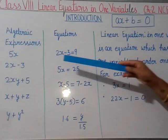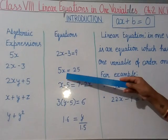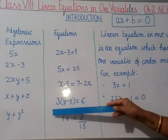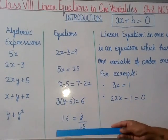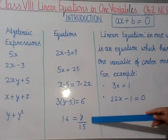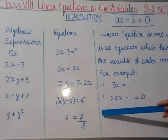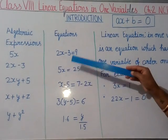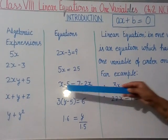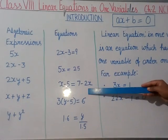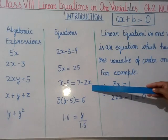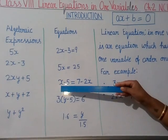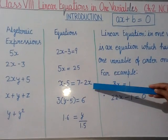Now, observe one by one: 2x minus 3 equal to 9, 5x equal to 25, x minus 5 equal to 7 minus 2x, 3 into y minus 5 equal to 6, and 1.6 equal to y upon 1.5. These are equations. But observe, there is only one variable in all the equations. It does not matter that it is on left hand side and right hand side also. This is a one variable equation.